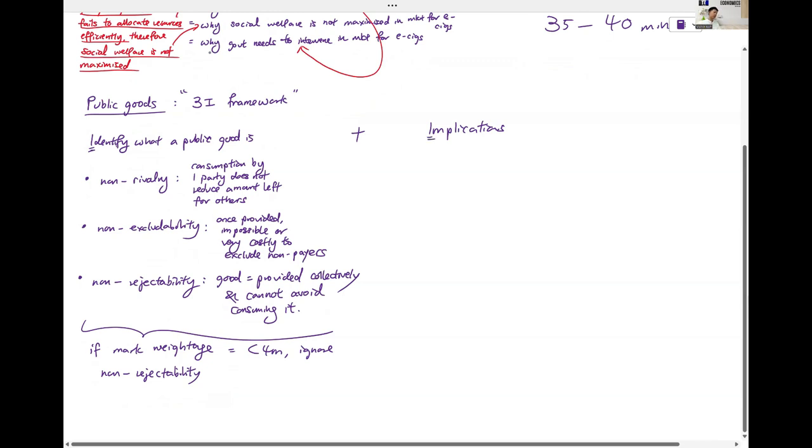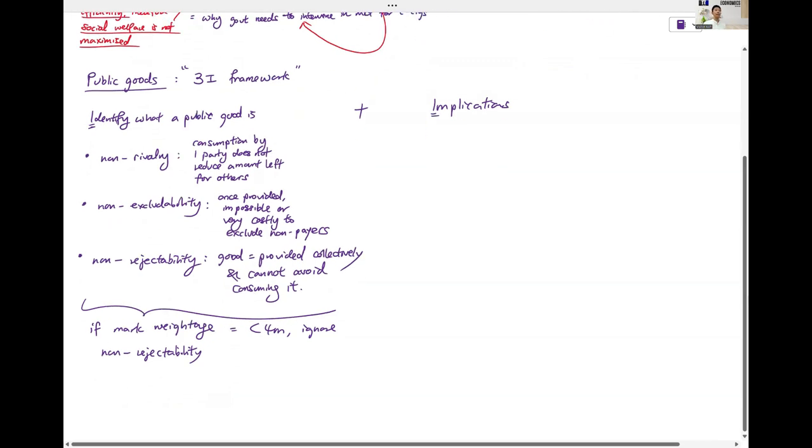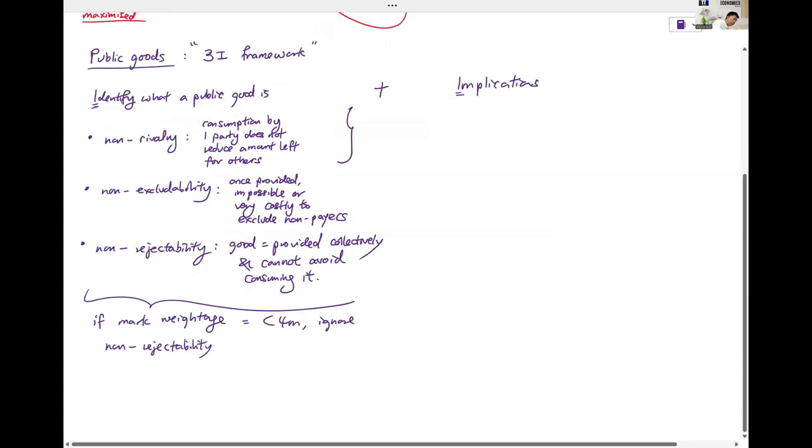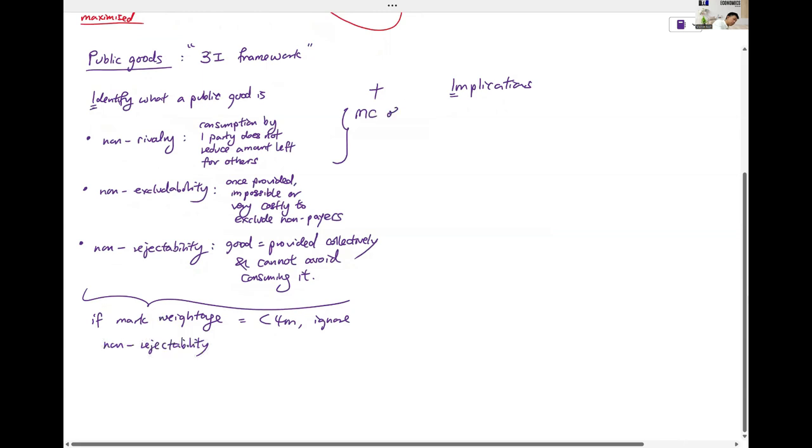Okay, this is the second I. The implications of non-rivalry. The implications are that the marginal cost of serving one more consumer is zero. Marginal cost of serving one more person is zero.